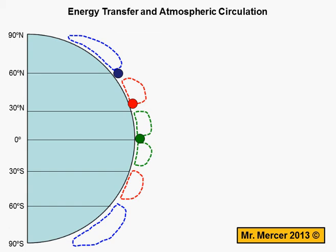Hi there, and welcome to Energy Transfer and Atmospheric Circulation with Mr Mercer. In this question, what you are being asked to do is to explain how energy is moved from the equator to the poles and back again. The logical place to begin is always with the sun's radiation arriving at Earth, and after that point, try and tell it as if it were a story.